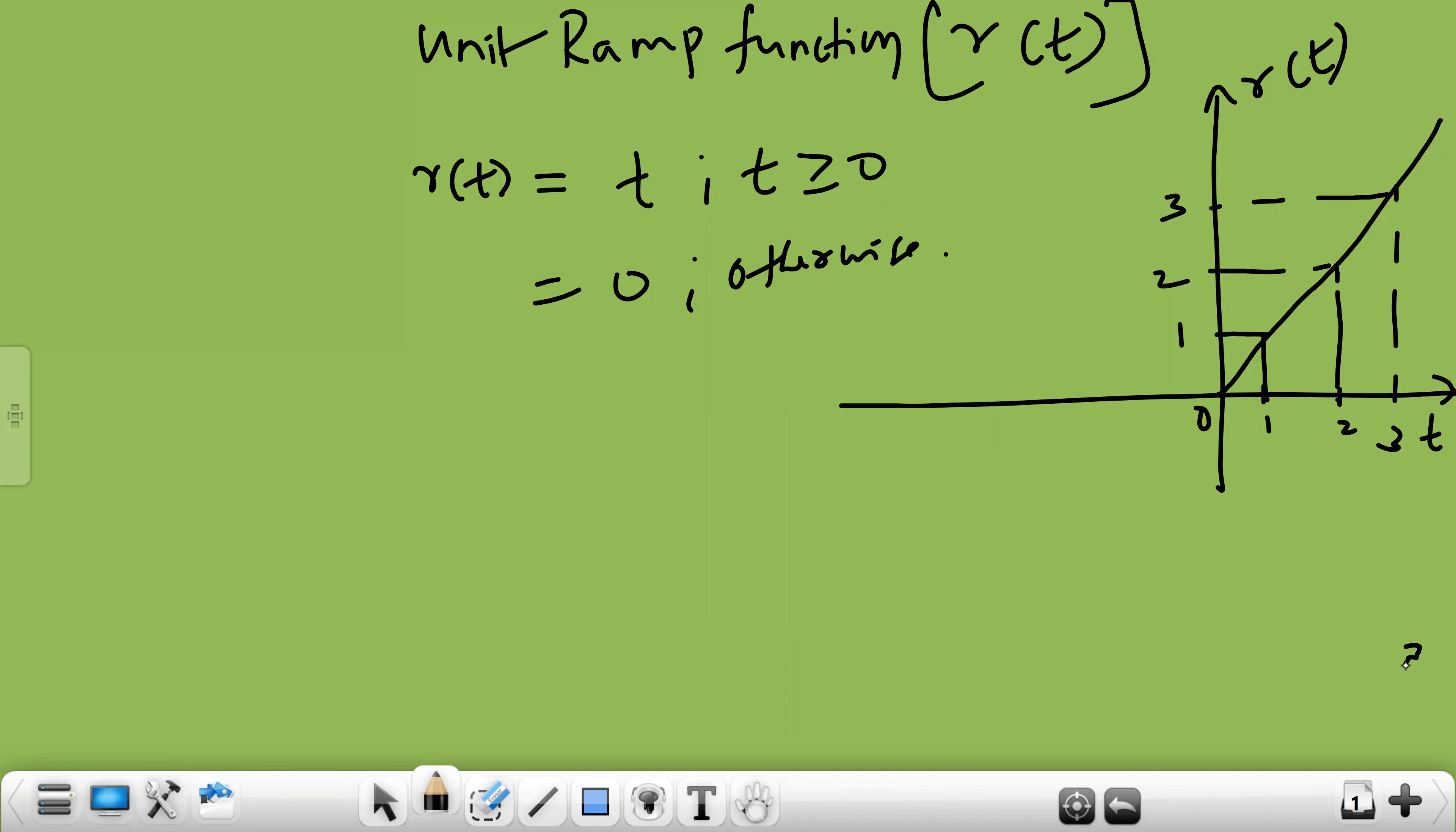Now, I just want from you, how you can generate this ramp function from unit step function. What was the first signal you have plotted? It is called as unit step function. So how we are going to get this signal from unit step function, anybody can say.